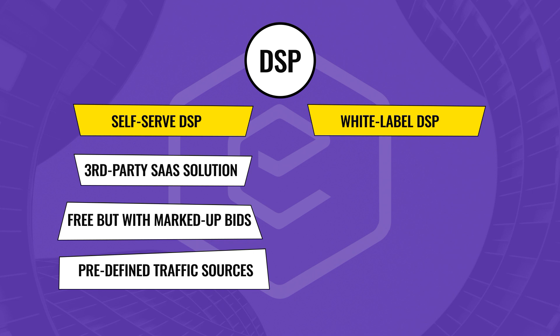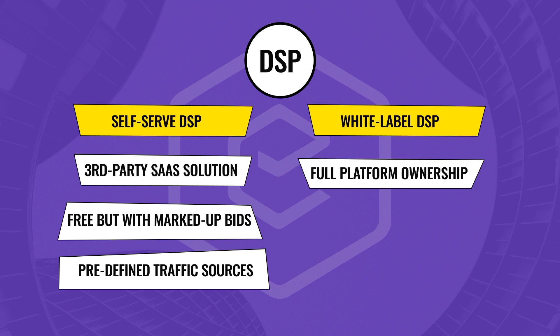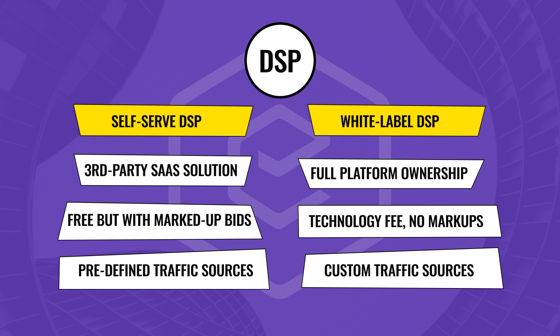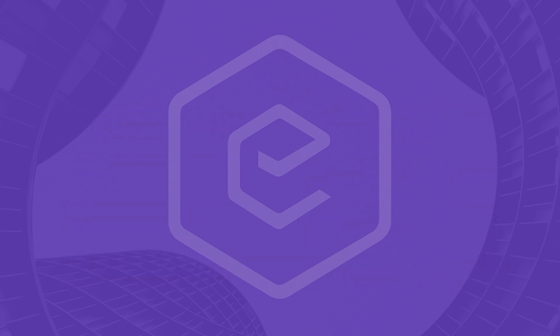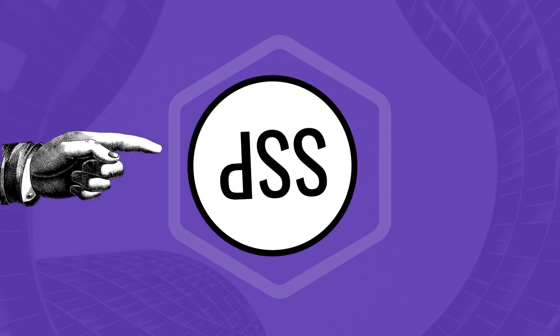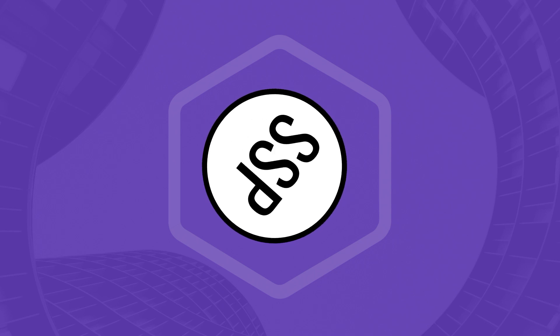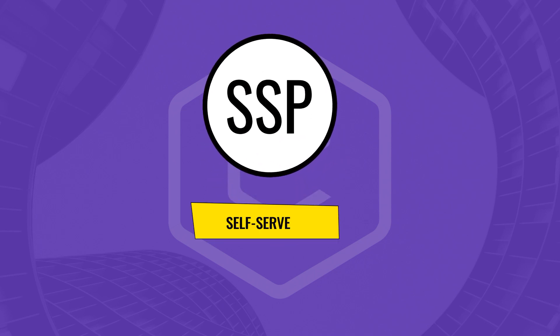A white-label DSP is a different story. You buy platform ownership and customize the DSP as you need, cutting out middlemen and saving up to 50% of your ad spend. Moreover, all traffic sources are under your control, as you are the one who manages SSP connections. The core tool from the publisher's side is a supply-side platform, and just like a DSP, an SSP may be self-serve or white-label.